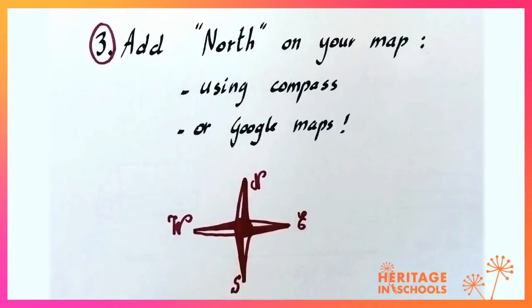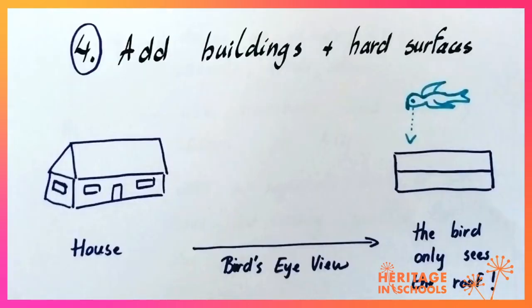You're going to want to add a north arrow on your map. You can use a compass or Google Maps again, and then add some buildings. For example, a house is going to look like a rectangle viewed from the sky.